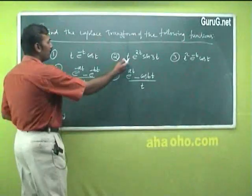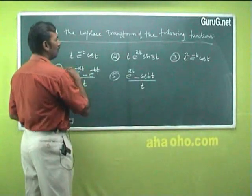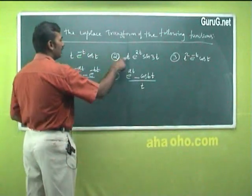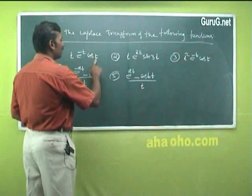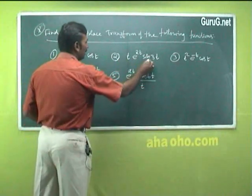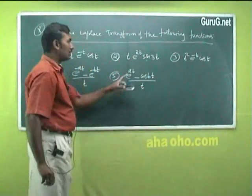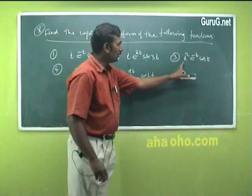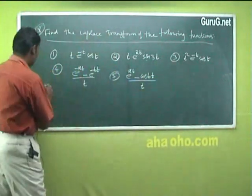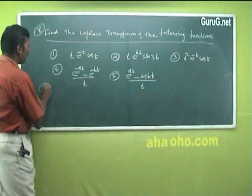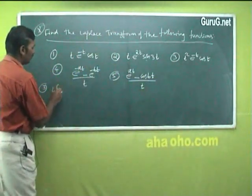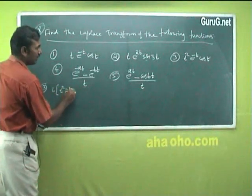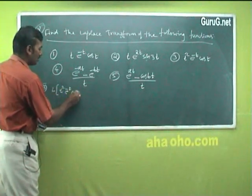The second problem, e^(-1)²·e^(2t)²·cos(t)/sin(3t), is just like the previous problem — try it yourself. Now for the third problem: find the Laplace transform of t²·e^(-t)·cos(t).